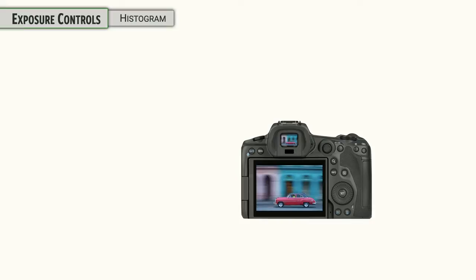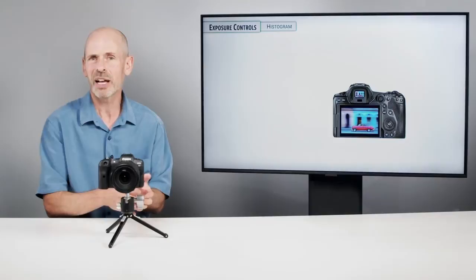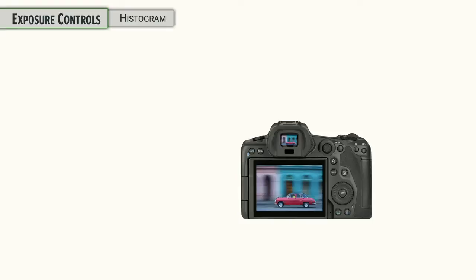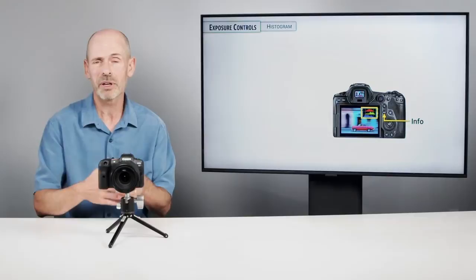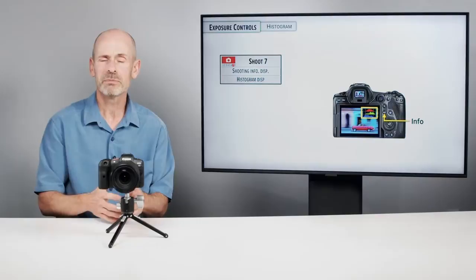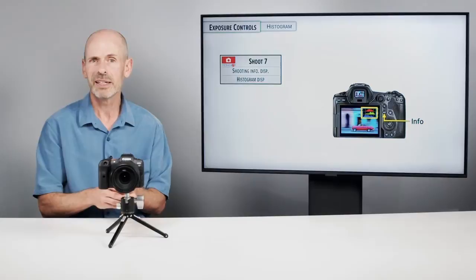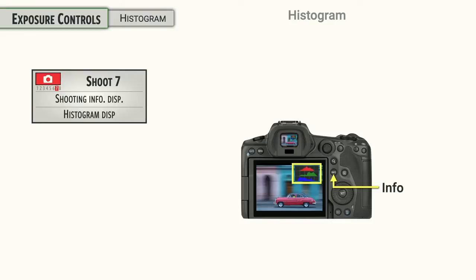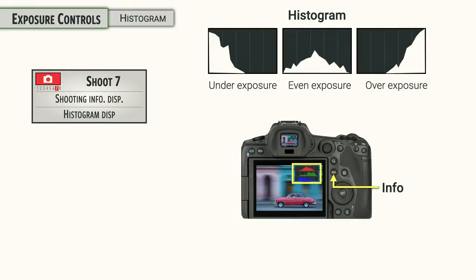Let's talk about the histogram — one of the great ways to judge if you've got the right exposure with a digital camera is to review the image and check the histogram. When you look at the actual image it may be hard to tell if you've got all the information you need. Hit the Info button to cycle through different screens, and one will show you the histogram. This is live as you're looking through the camera at your subject. In Shoot Menu 7 you can control the histogram display — brightness or RGB version — and how big it is in the frame.